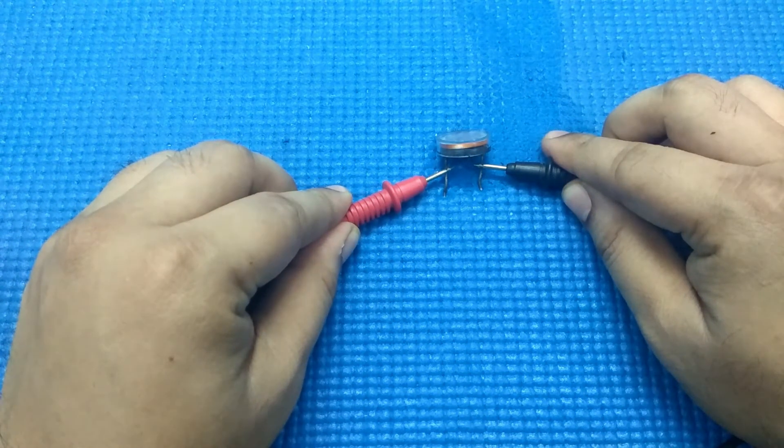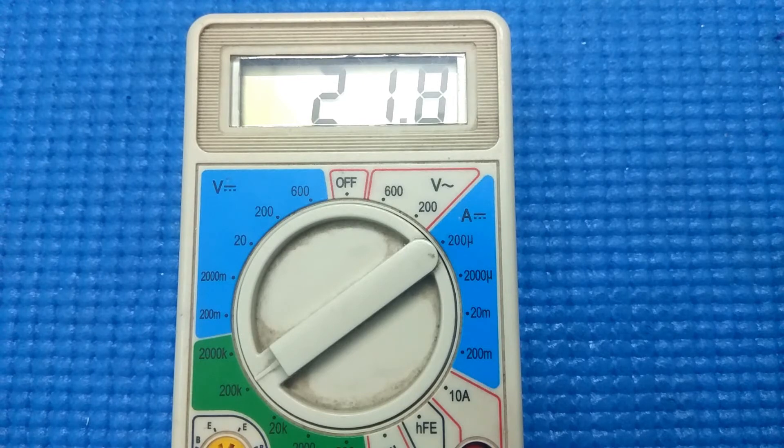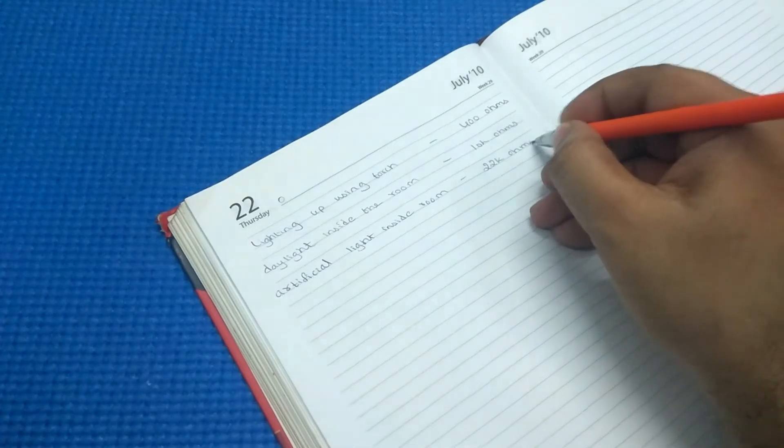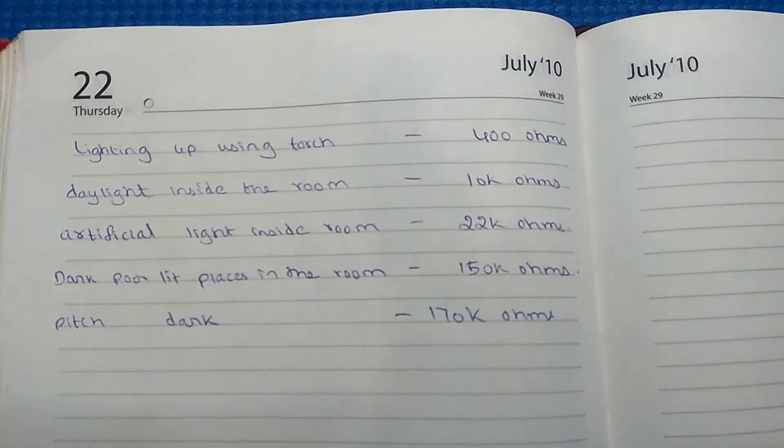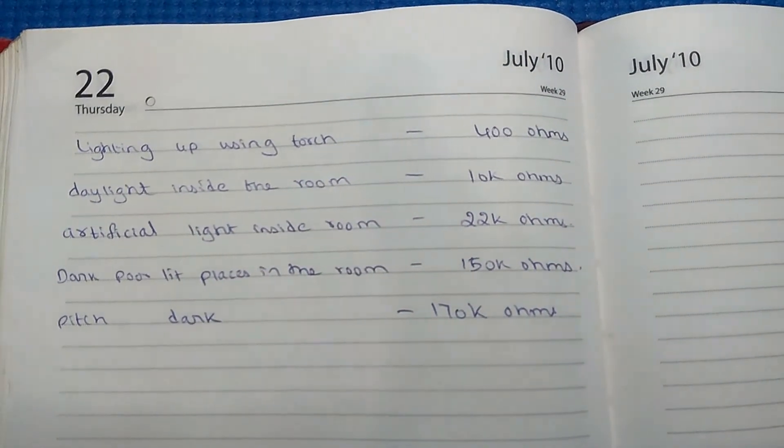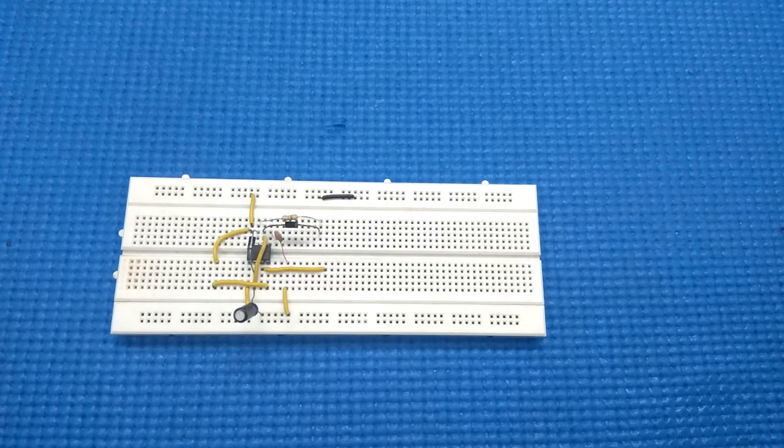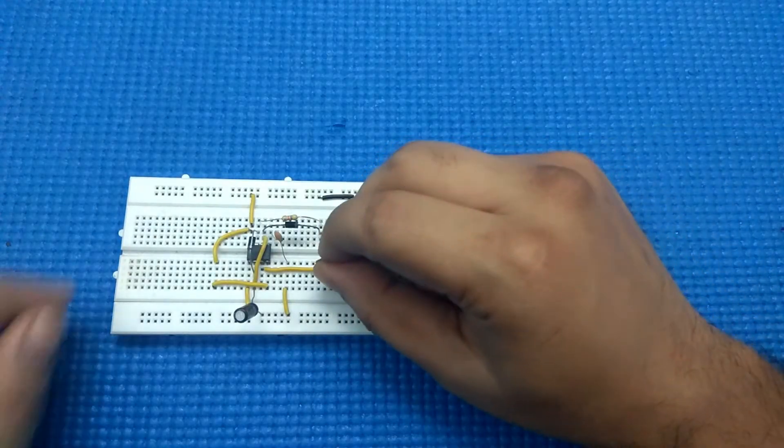Start by measuring the resistance of LDR under different light conditions and note them down. This will be especially helpful for calculating the resistance and capacitance values of your project. Start assembling the circuit in a simple breadboard.